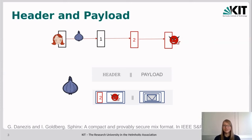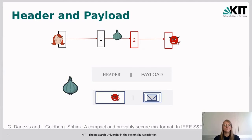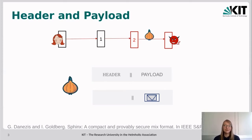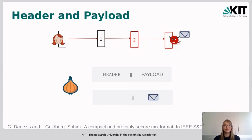Looking at the blue onion example: the outermost layer of the header is encrypted with the public key of the first relay, so the first relay can remove this layer and sees that the onion needs to go to the second relay next. The first relay also removes one layer of encryption from the payload, thereby producing the green onion. The second relay removes one layer from the header to realize it must send the onion to the final receiver, and one layer from the payload. The encrypted payload is then sent to the receiver, who removes the last layer to see the included message.